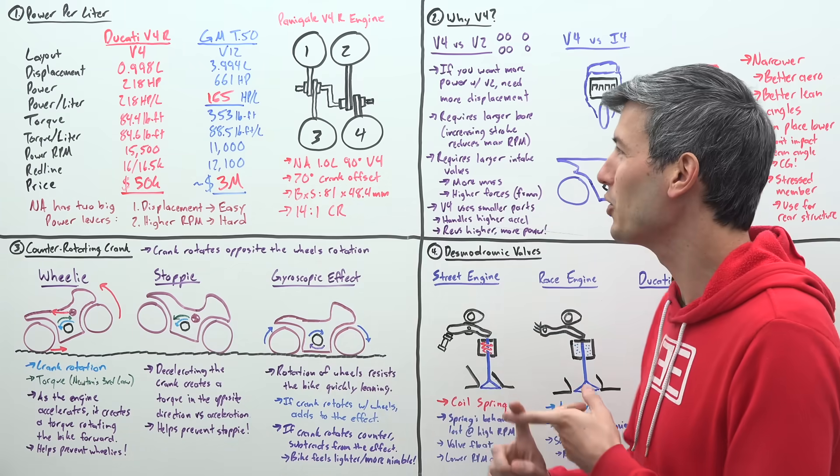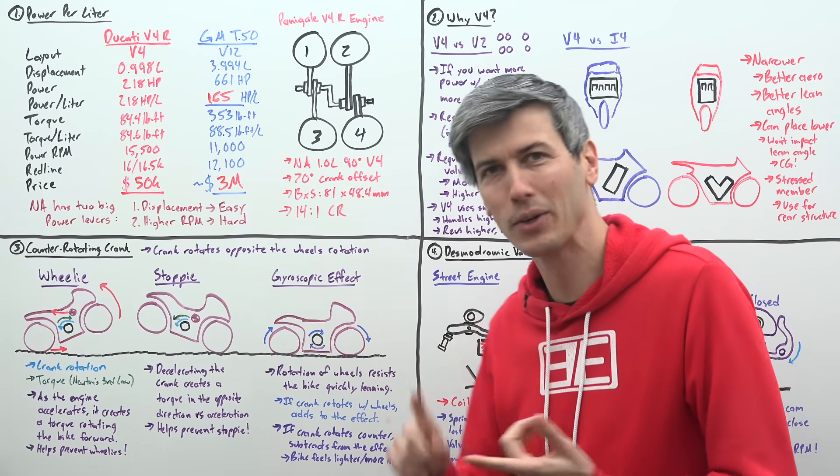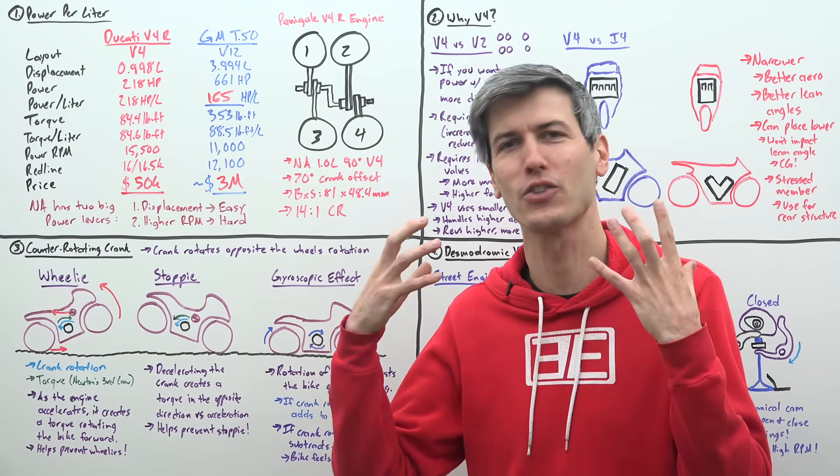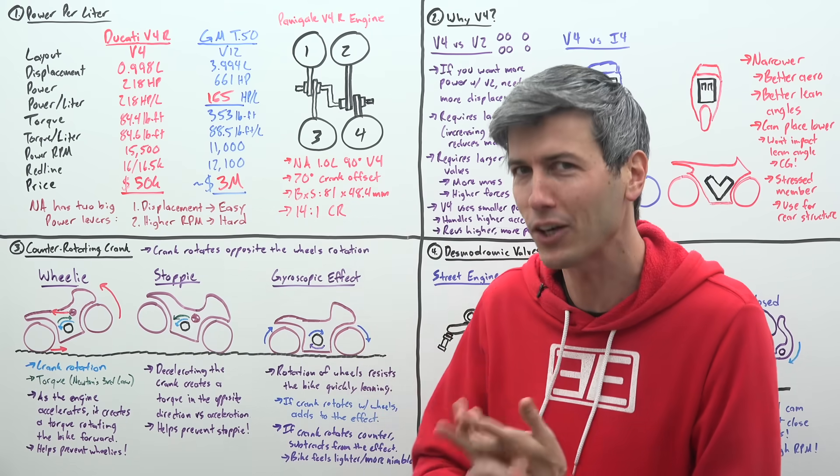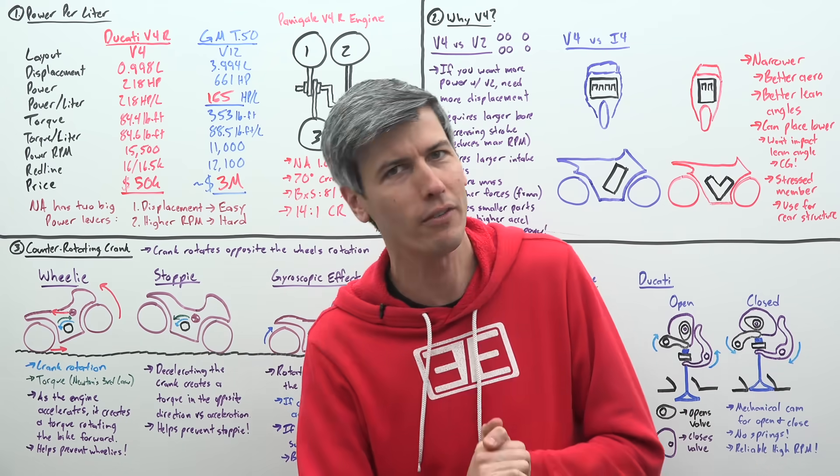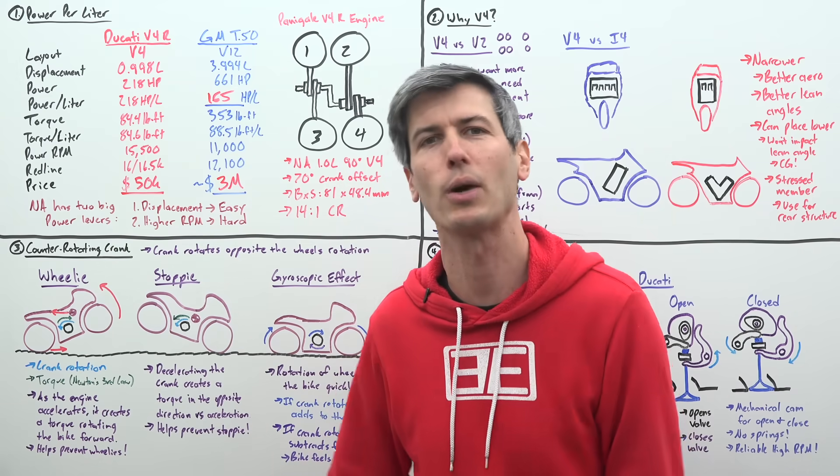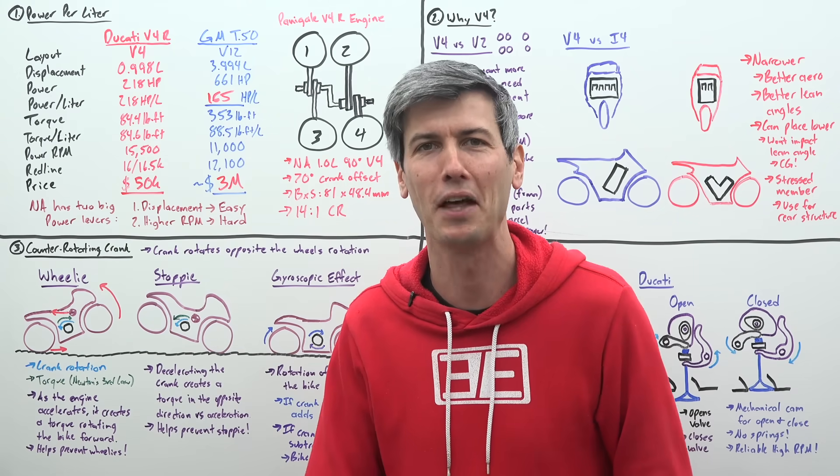Now, something we didn't even get into is why they're using a 70 degree crank offset with a 90 degree V4 engine, and it turns into this really interesting discussion on firing order and firing interval, perhaps in a future video I'll cover that if people are interested in this. Thank you all so much for watching, if you have any questions or comments, feel free to leave them below.